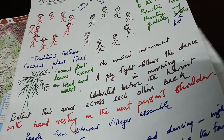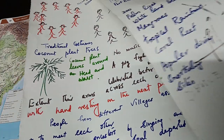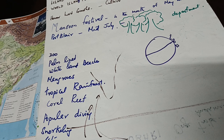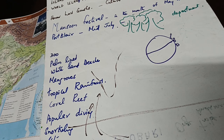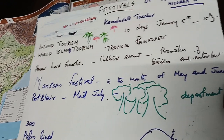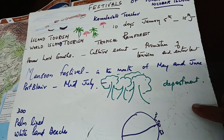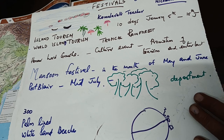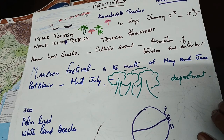Next, the fairs and festivals. Among these, I have seen the island tourism festival, then monsoon festival, etc. The island tourism festival is about a 10-day festival from 5th June to 15th June.